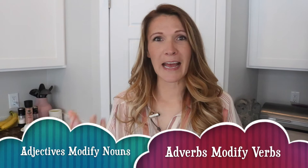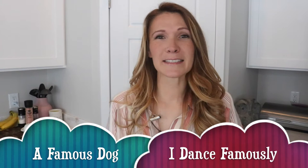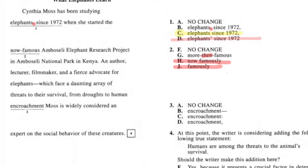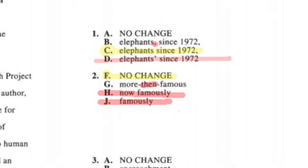Question two is a grammar question about adverbs versus adjectives. An adjective describes a noun — 'a famous dog' — and an adverb describes a verb — 'I dance famously.' What we're describing here is 'the project,' which is a noun, so we need an adjective. 'More than famous' doesn't work because 'than' implies a time comparison. The right answer is F — no change.